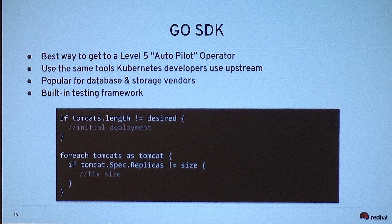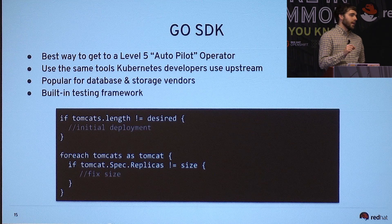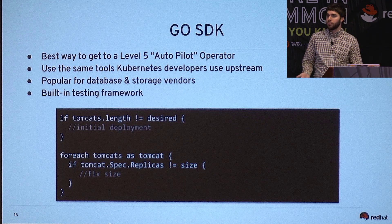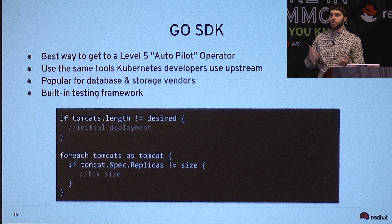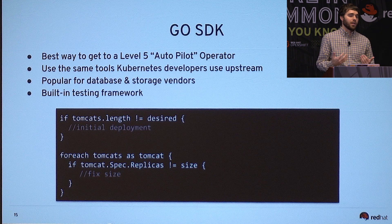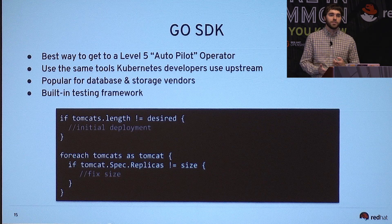All the way at level five, the thing that database vendors are going to use to build operators is our Go SDK. The really exciting thing is it uses the same tools that Kubernetes developers upstream use to build Kubernetes itself. Everything at your disposal there, you can build inside of an operator. This is really popular for very advanced operators doing auto-scaling, data rebalancing, databases, and storage tiers.